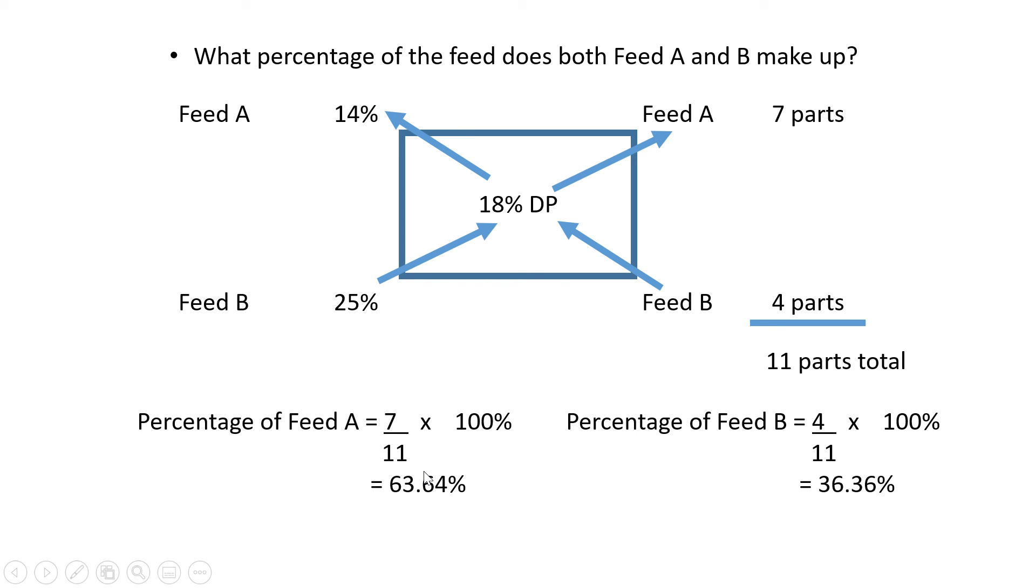You can subtract this from 100 to get Feed B's percentage, or if they ask for it with marks, show the equation. The percentage of Feed B would be four divided by 11 times 100, which gives you 36.36%.